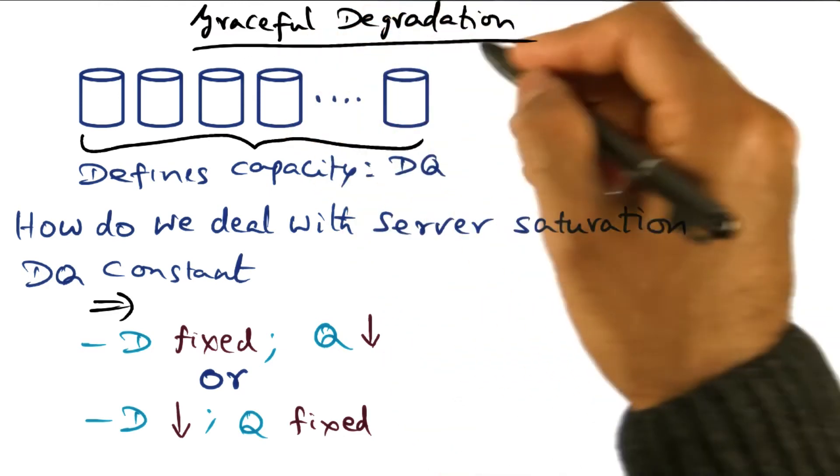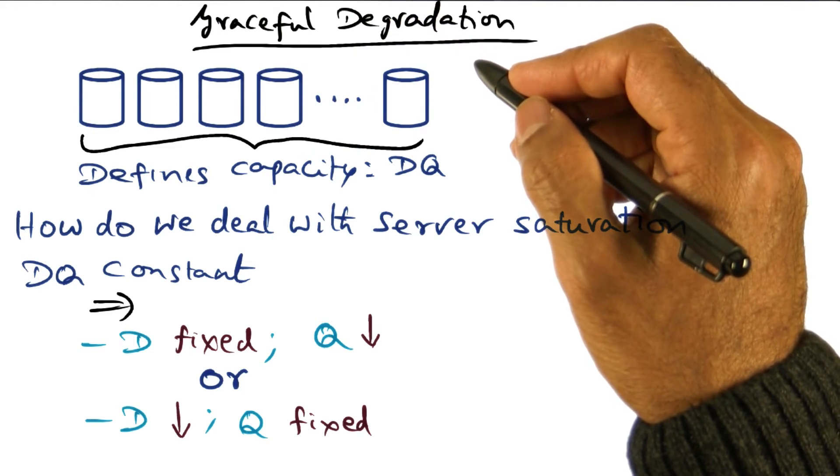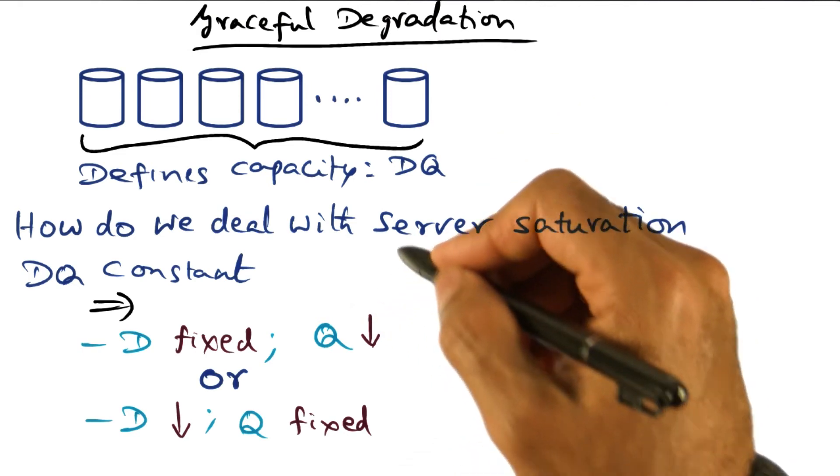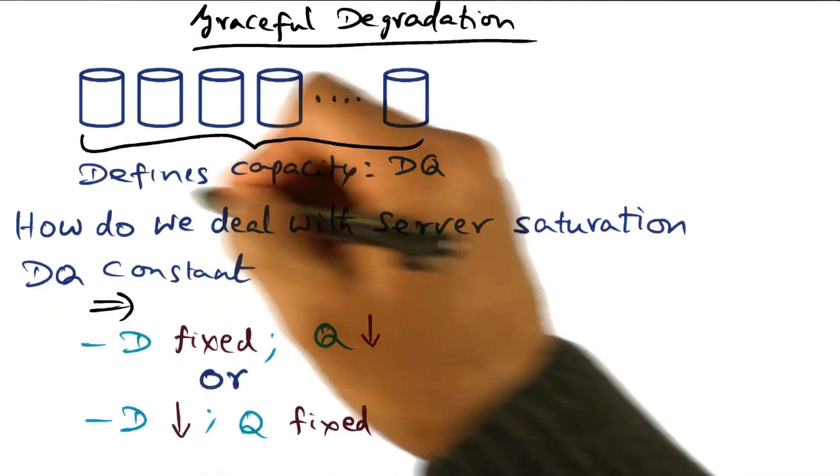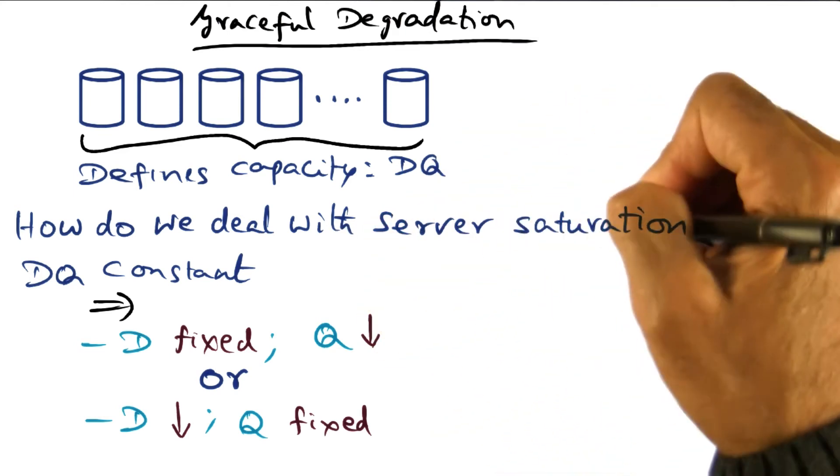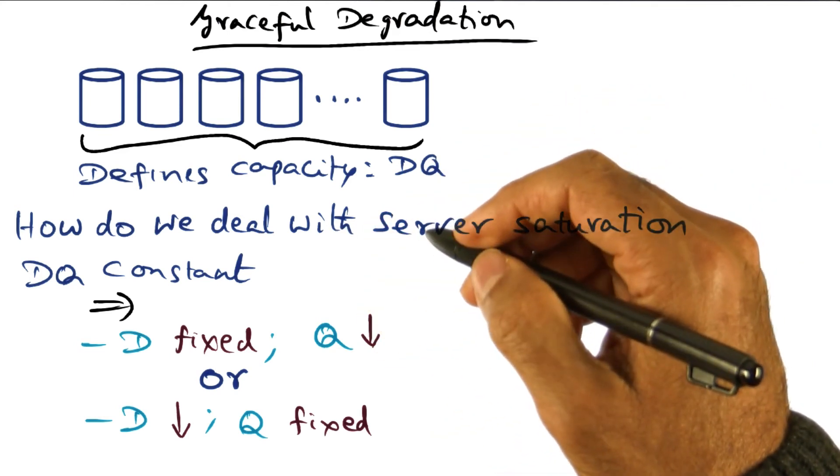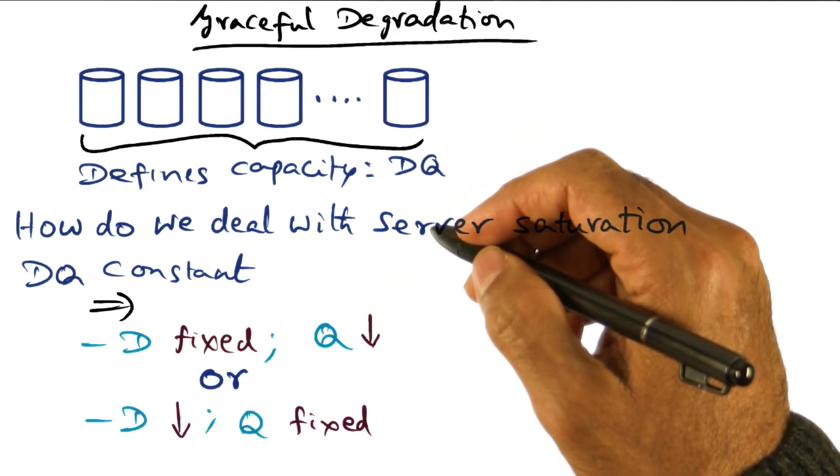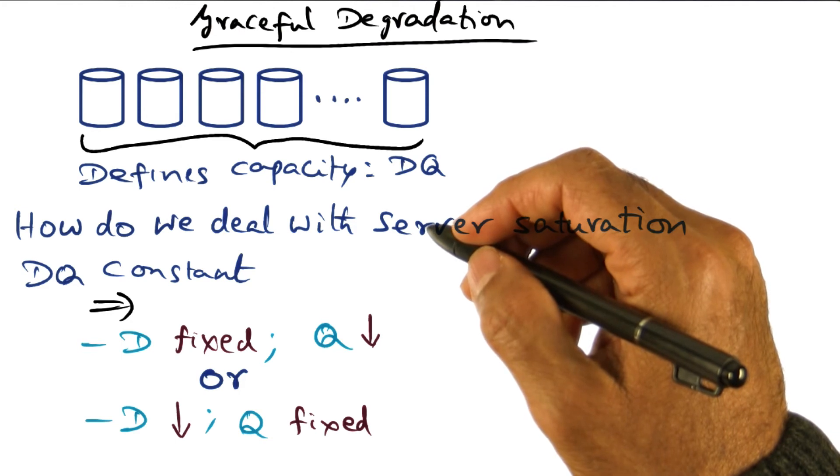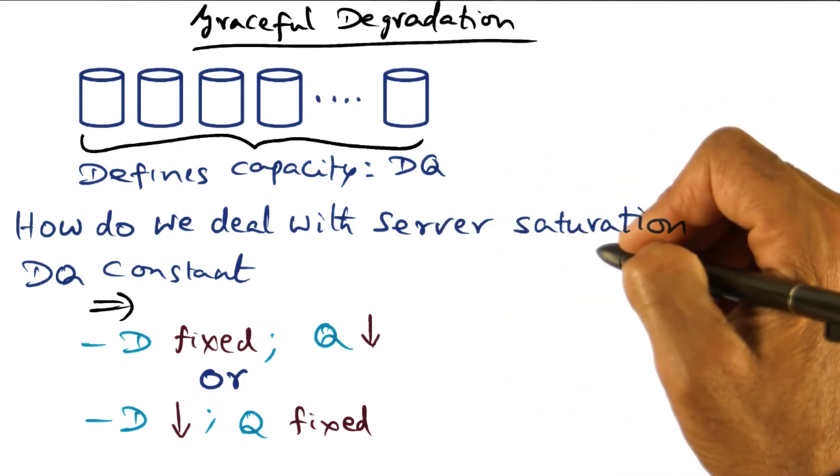So the choices that a system provider has, or strategies that a system provider can use in structuring the service, knowing that DQ is a constant, is when the server is saturated, they can do cost-based admission control. You pay more, you get more. That may be one way to do it. Or priority or value-based admission control. That may be another way to deal with server saturation.